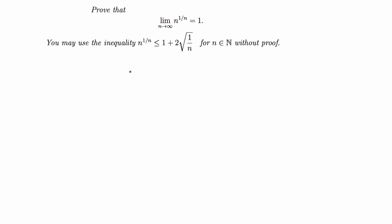Hey guys, in this video I'm going to go over another proof problem. This problem says: prove that the limit of n to the 1 over n, as n goes to infinity, is equal to 1. It says we may use the inequality n to the 1 over n is less than or equal to 1 plus 2 times the square root of 1 over n, for all n in the naturals, without proof.